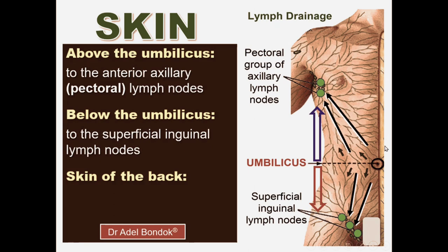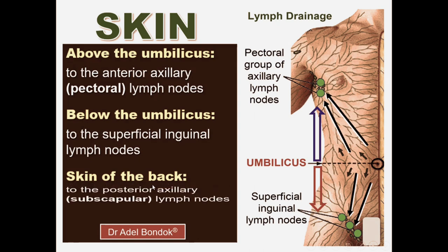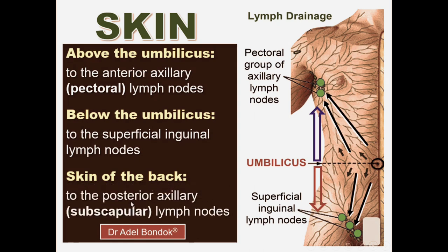To summarize the anterior abdominal wall skin: above the umbilicus drains into the anterior group of the axillary lymph nodes, and below the umbilicus drains into the superficial inguinal lymph nodes — the horizontal group. Regarding the skin of the back of the trunk, lymphatics drain into the posterior axillary lymph nodes, also called the subscapular group.